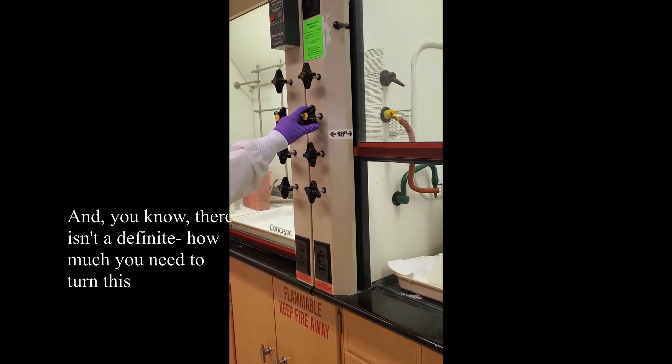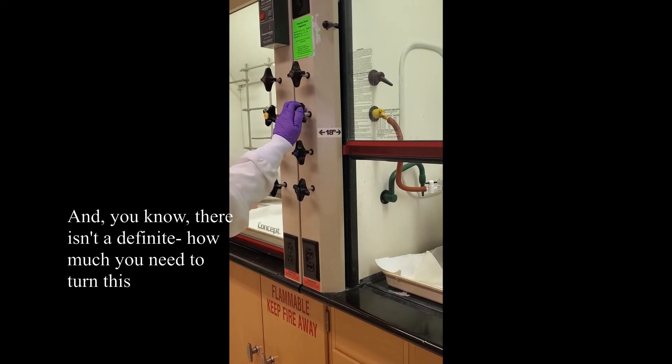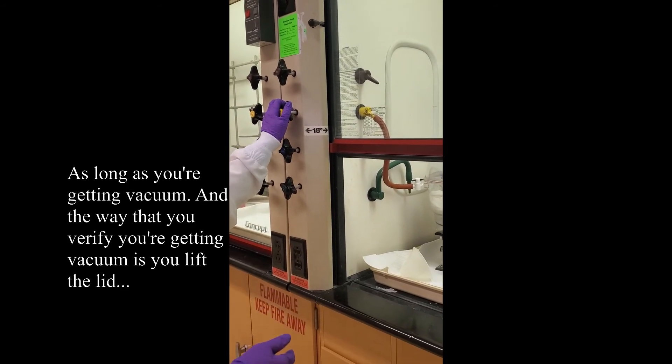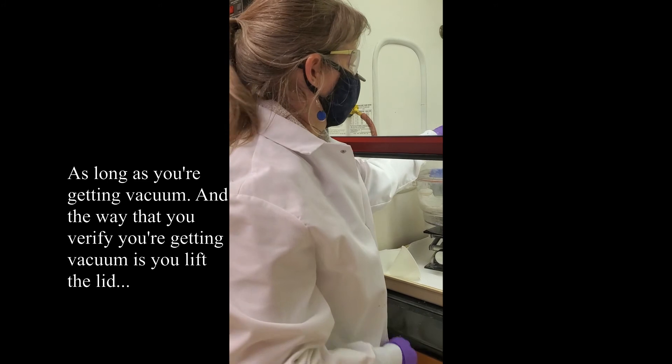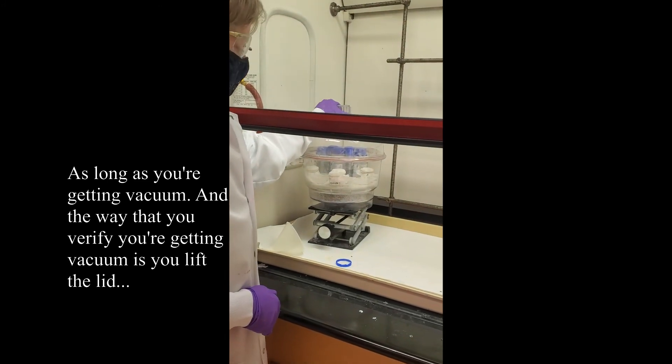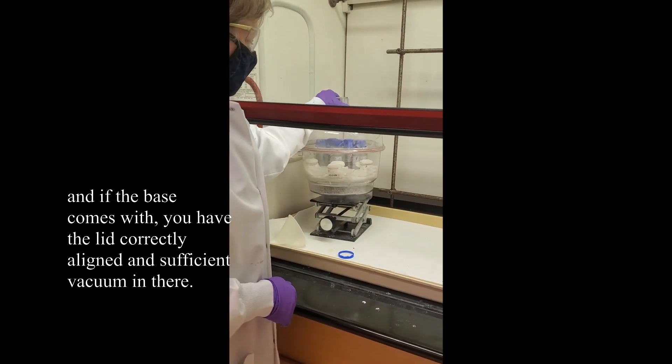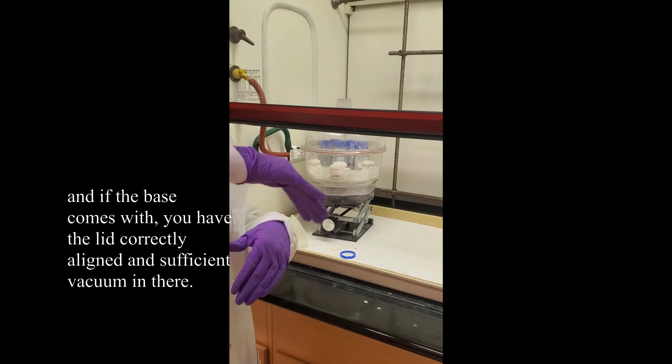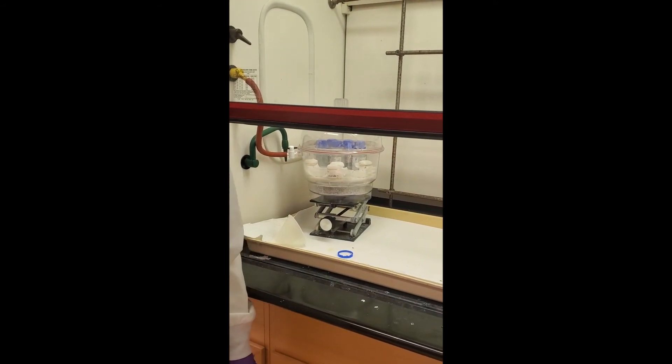There isn't a definite how much you need to turn this as long as you're getting vacuum. And the way that you verify you're getting vacuum is you lift the lid and if the base comes up, you have the lid correctly aligned and switched back to vacuum.